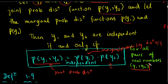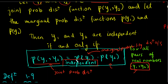y1, y2 — if they are independent, then the joint probability distribution function equals the product of the marginal probability distributions of y1 and y2. The marginal probability distribution of y1 and y2 can be defined as the joint probability distribution function.